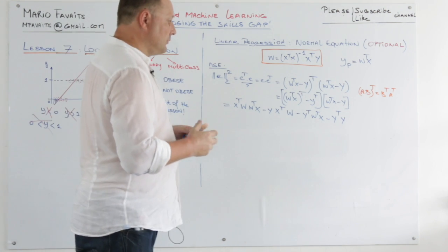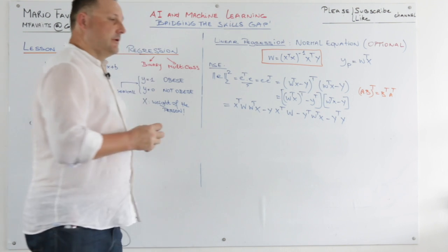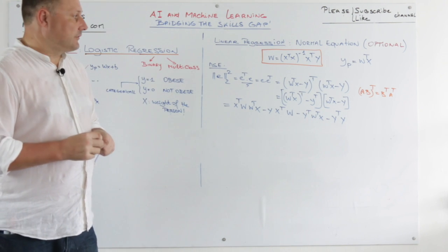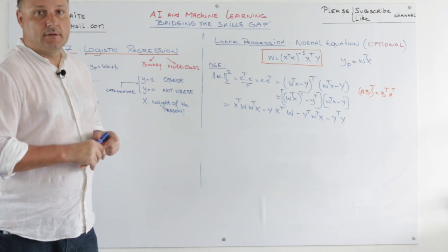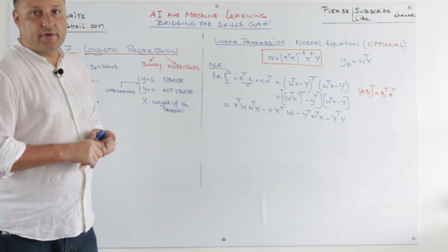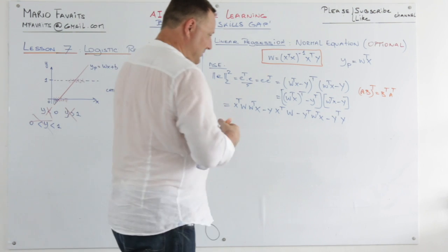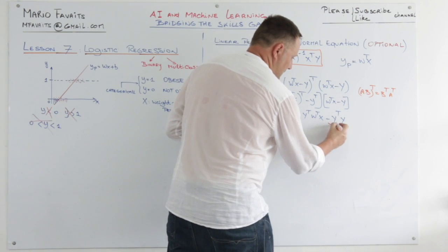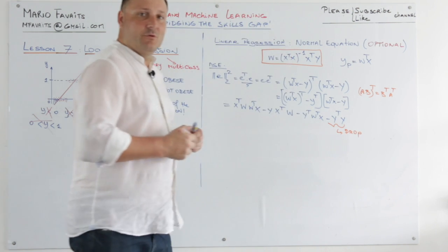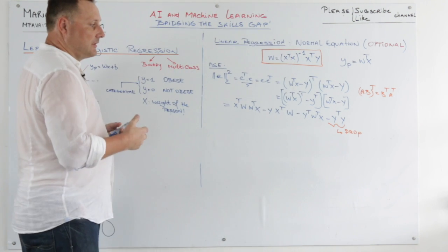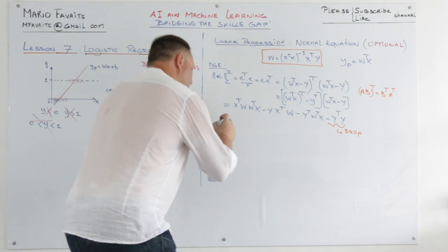So what we are going to do — if we want to find the W's, we need to take the gradient and put it equal to zero. This last term, Y transpose Y, we are going to drop. Why? Because there is no W in there, so the derivative will be zero.